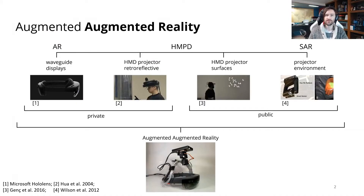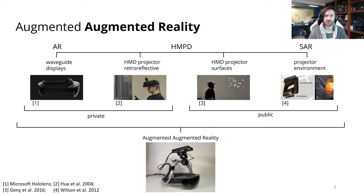First, let's define what augmented augmented reality is. If we consider AAR conceptually as a means to alter or enhance the user's physical environment with digital information, we can think of the implementations to achieve that goal along a continuum — from commercial approaches with waveguide displays like the HoloLens, to approaches using a head-mounted projector with a beam splitter and retroreflective surfaces, to approaches that directly augment physical surfaces, and finally, in-situ projectors embedded directly within the physical environment they are augmenting.